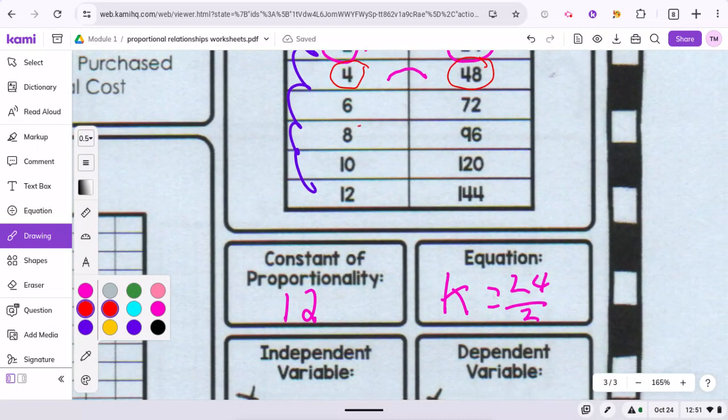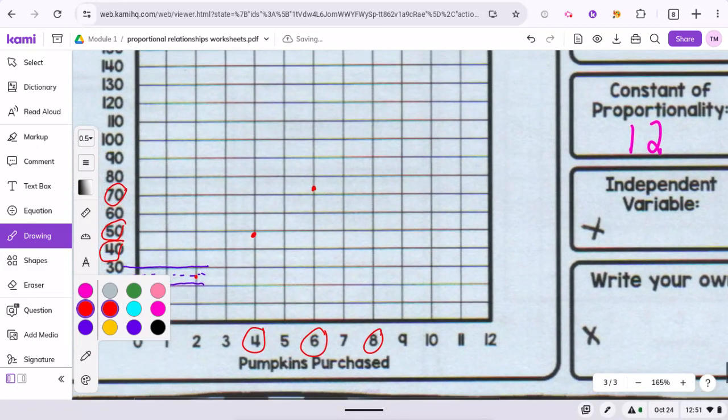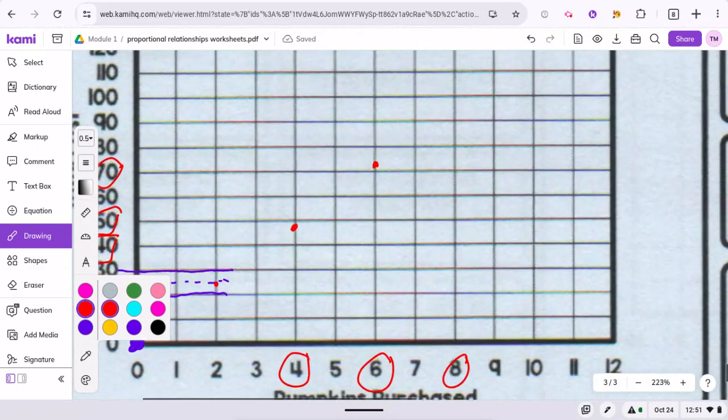And then 8 and 96. 8 and 96. 8 here. 90 is here. 100 is here. So it would be just over halfway. Right about there.